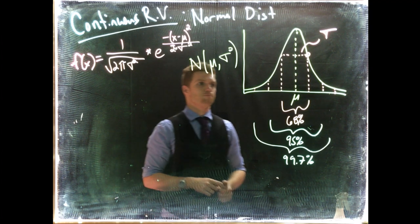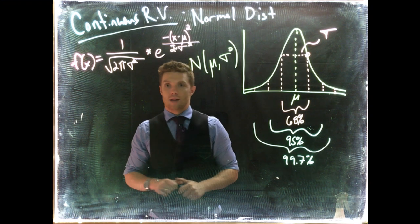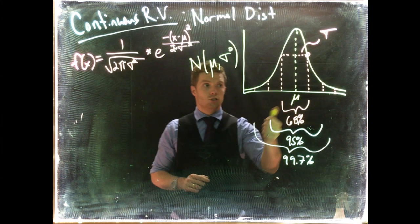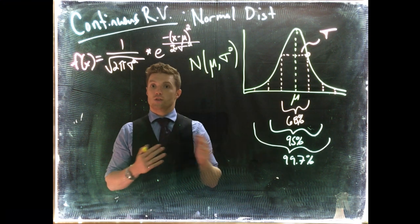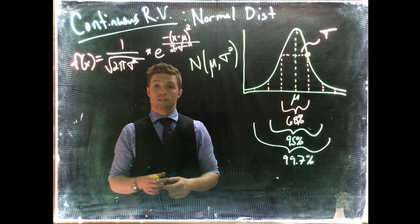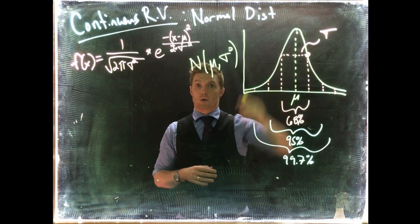Some interesting things about the normal distribution: it's symmetrical, so if you fold it about the middle it's the same both to the left and the right. This means that the mean, the median, and the mode are all right at the exact same point.